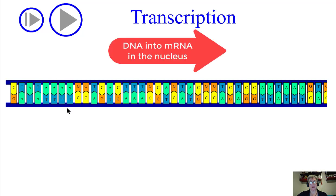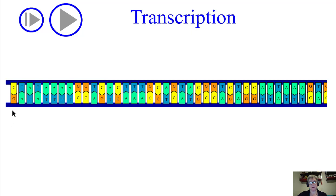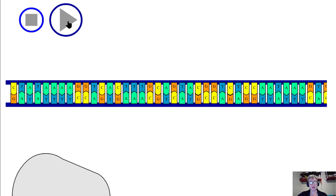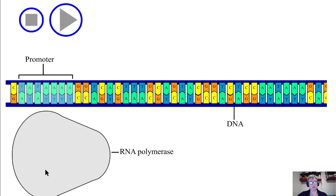We have our double-stranded DNA molecule here with its complementary base pairing, and you can think of this stretch of sequence as containing a gene that needs to be turned into a protein. We have an RNA polymerase — this is an enzyme that builds an RNA molecule. It will bind to a region of the DNA called a promoter that says that a gene needs to be turned into a protein.